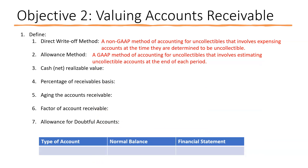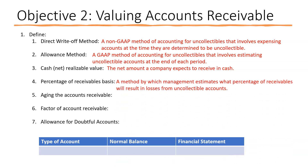The allowance method is a GAAP method of accounting for uncollectibles that involves estimating uncollectible accounts at the end of each period. You apply a predetermined percentage to your accounts receivable to determine the allowance needed in the allowance for doubtful accounts. The net realizable value is the gross accounts receivable less that allowance. The percentage of receivables basis applies expected loss percentages from an aging schedule.